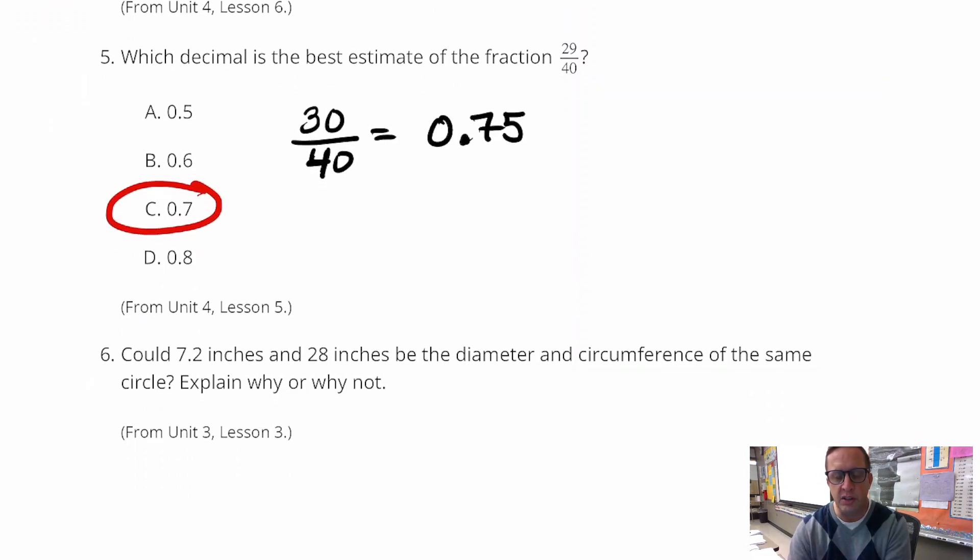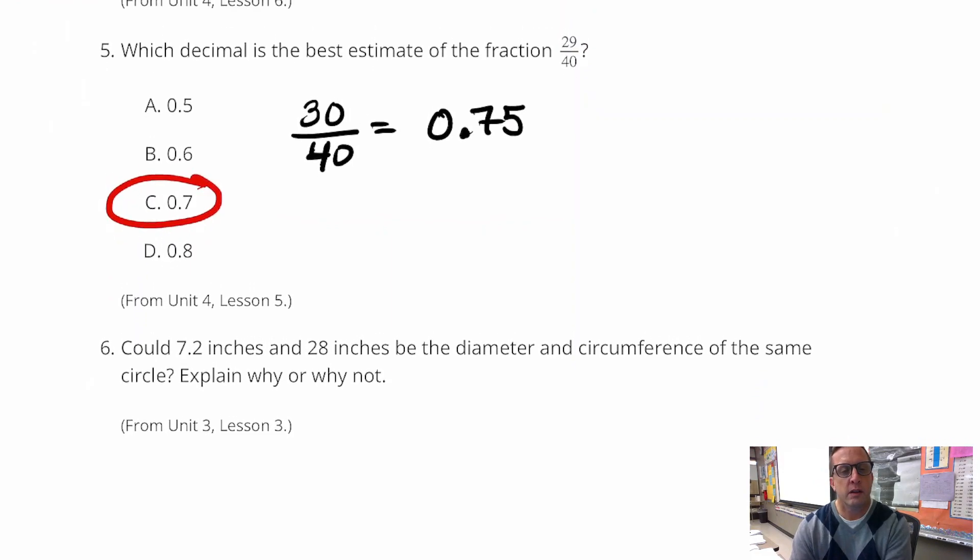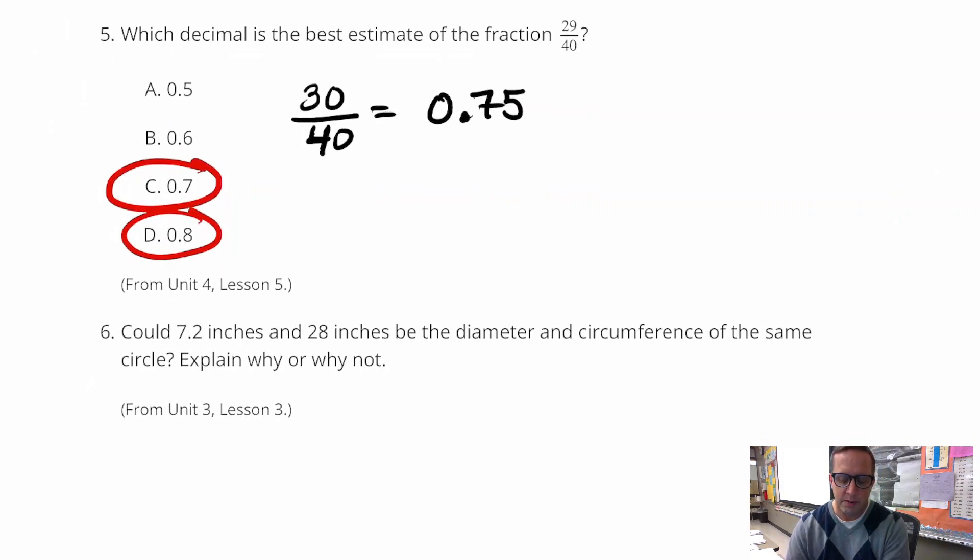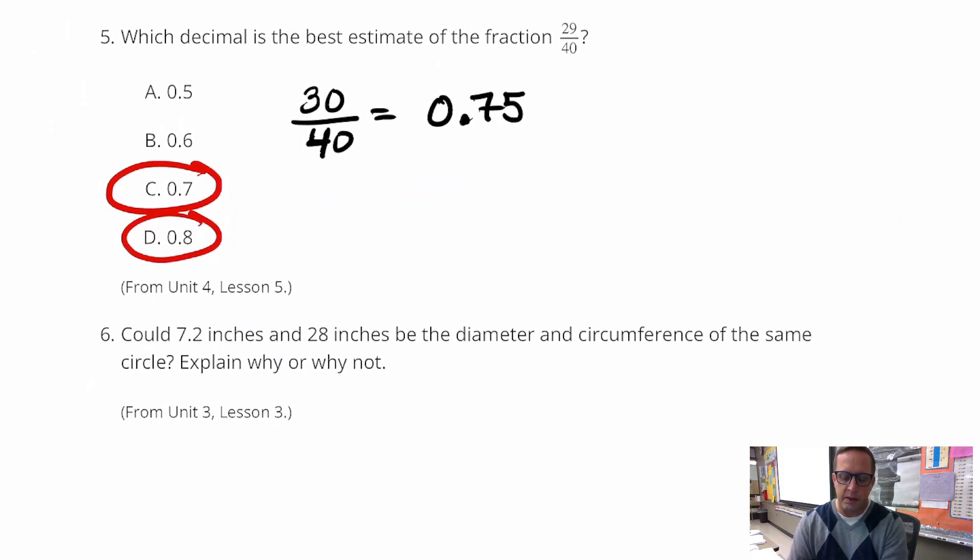Now, B is not that far, but C is the closest. So is D, I guess. I mean, D is not that, I guess if we round up. But if I really, if I actually figure that out, what's that, 29 divided by 40? Yeah, that's 0.725. It's not D.